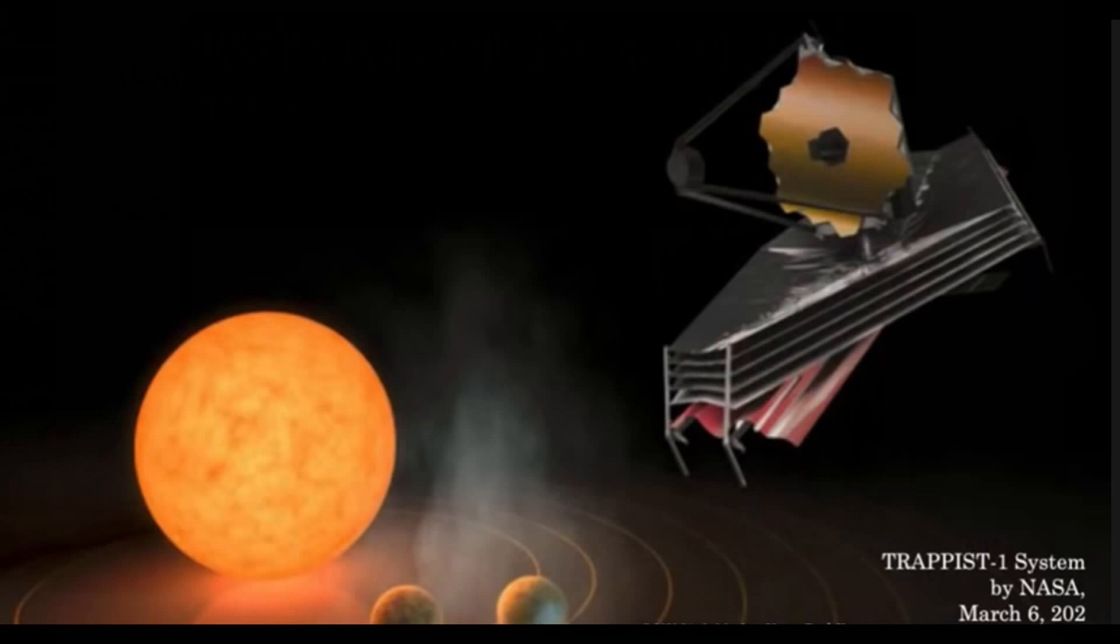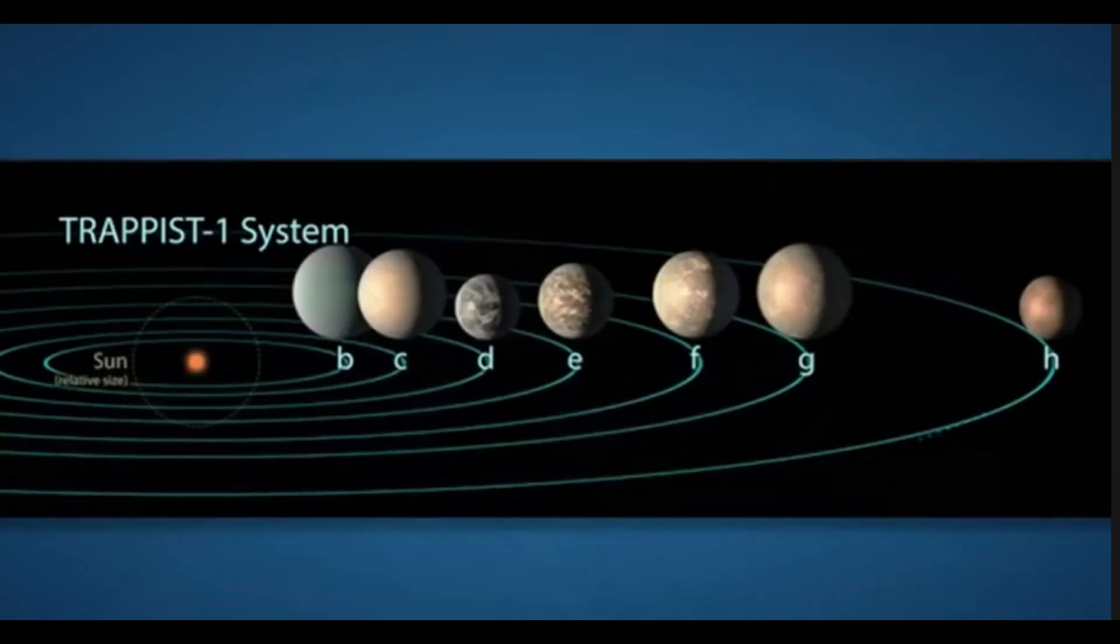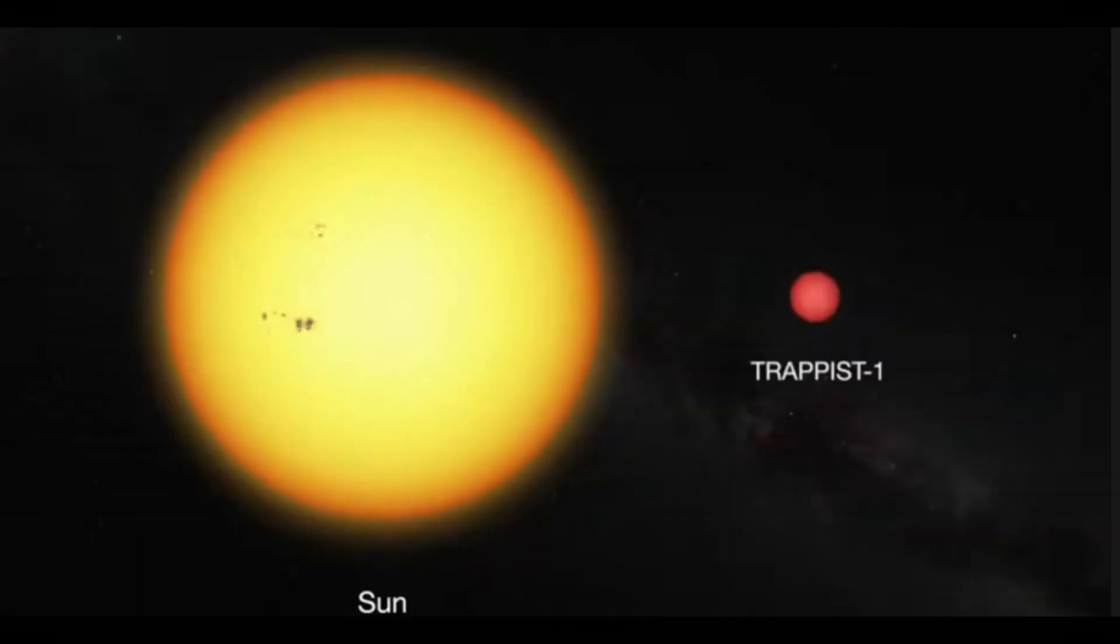And I know that the new James Webb Space Telescope was launched, and their first missions are called Super Secret. And the first star that they are apparently looking at is TRAPPIST-1. Why it's Super Secret, I have no idea.